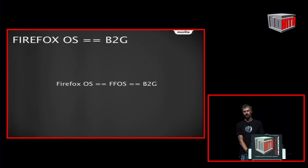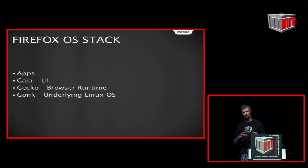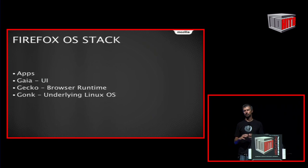Some quick definitions: Firefox OS is abbreviated FFOS, and BDG was our internal code name for what became Firefox OS. Firefox OS consists of a stack of layers. Underlying everything is what we call GONK, which is the basic Linux operating system and all the hardware abstraction — it takes care of radio interfaces, video, audio, storage, USB, Bluetooth, all the low-level stuff.